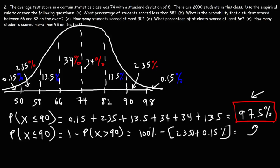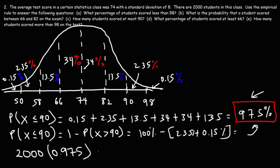We're looking for the number of students, not just a percentage. Converting 97.5% to a decimal gives 0.975. Multiplying 2,000 by 0.975 gives 1,950. So 1,950 students scored at most 90.